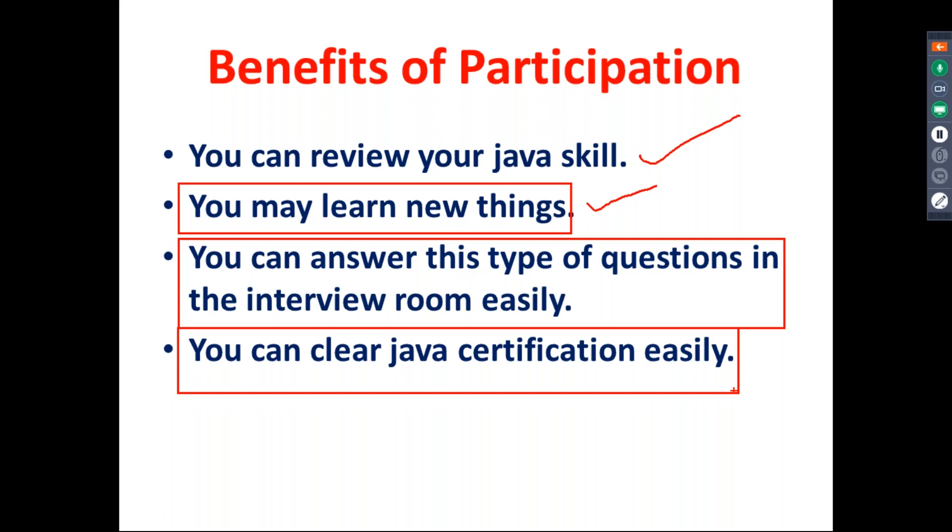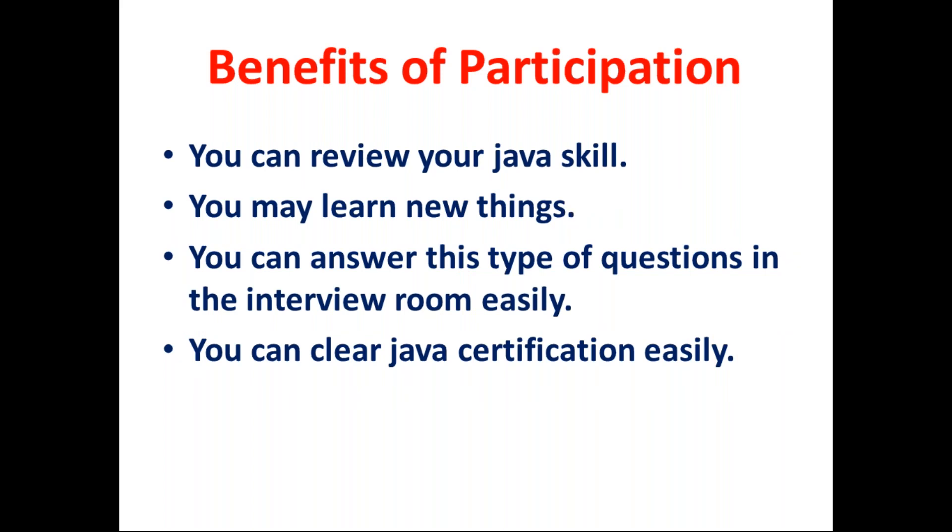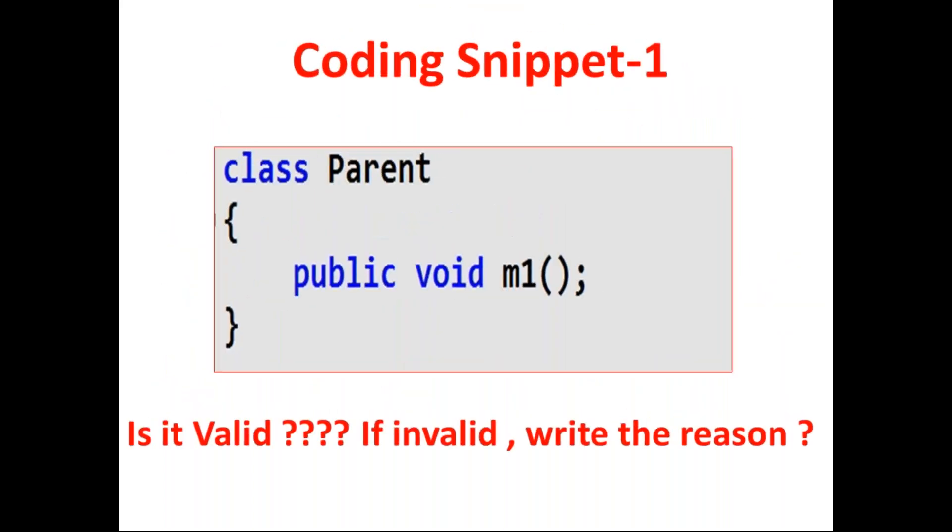Just observe, be ready for this. What is the first one? Coding snippet one. Class parent, public void m1. I told already, this is the first challenge. I don't want to increase complexity, just everyone can answer very easily. This is my coding snippet: class Parent, public void m1.